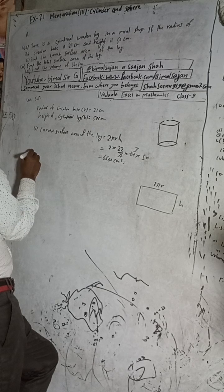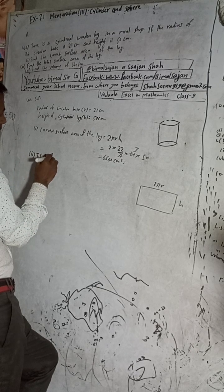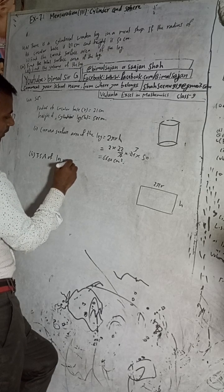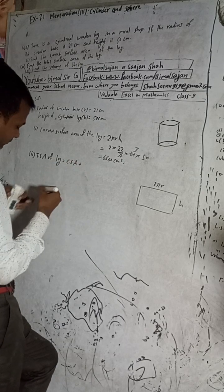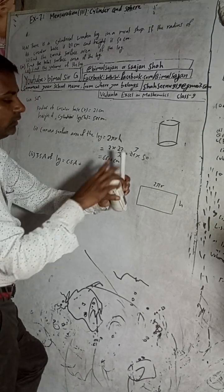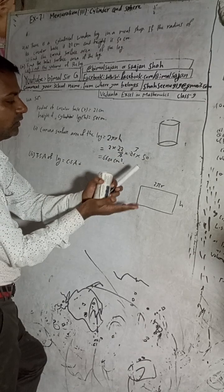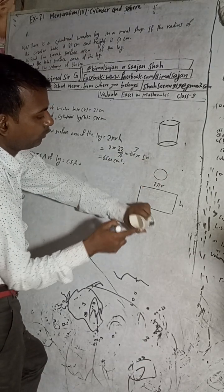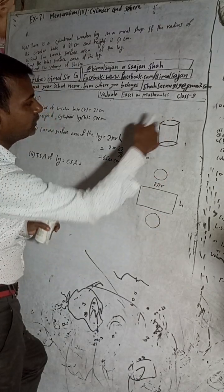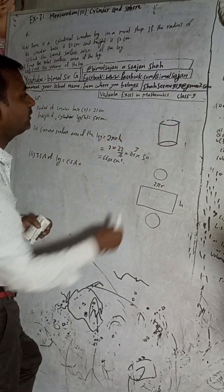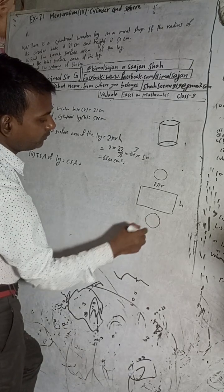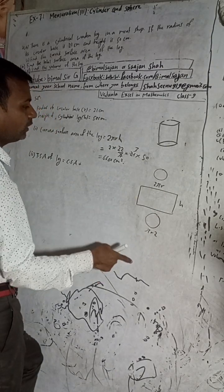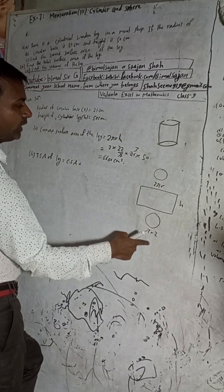Number two: find the total surface area of the log. Total surface area equals the curved surface area plus the top circle and the bottom circle. There are two circles — one on top and one at the bottom. The area of each circle is πr², so together they make 2πr². Adding this to the curved surface area gives the total surface area.